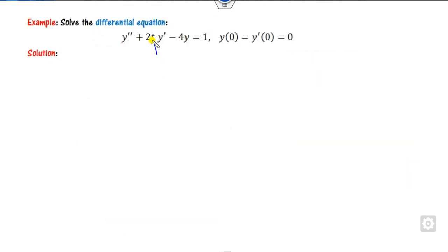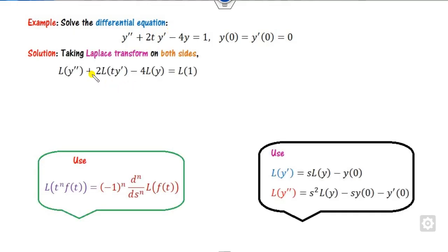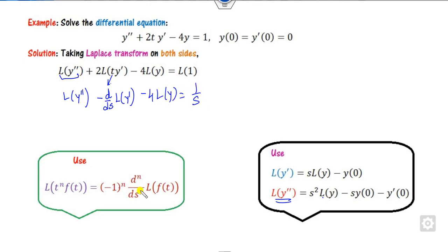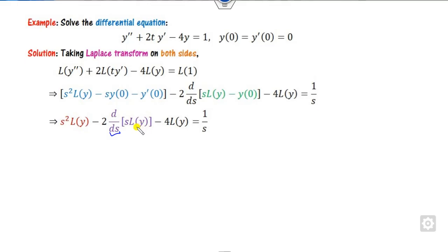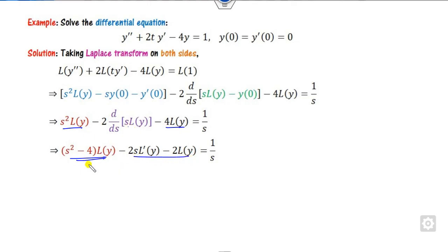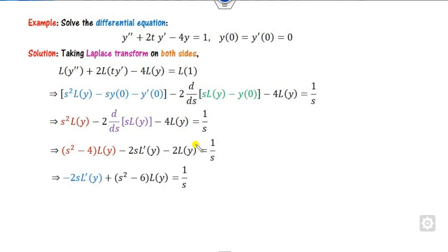Now look at Example 2. Again, there is a multiplication by T, so we take the Laplace transformation on both sides. Using the derivative rule with N = 1, we get minus d/ds of L{y'} minus 4L{...} = 1/S. Substituting the initial conditions — y(0) = 0 and y'(0) = 0 — and applying the product rule for the derivative, we expand and combine terms.